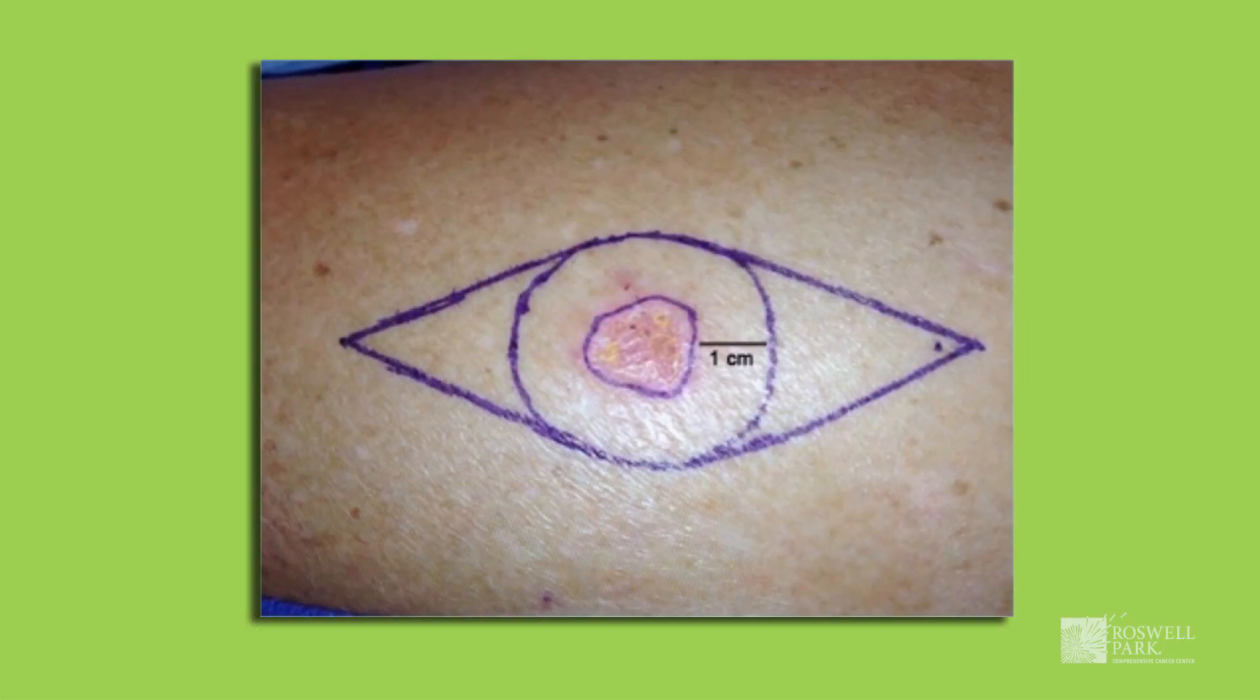When we're doing a wide excision with appropriate margins, we'll measure out a certain distance around the previous biopsy site. While it creates a circle shape, we can remove a circle but can't close it in a cosmetic fashion. So oftentimes we convert this circle shape into an ellipse that can be closed in a straight line.